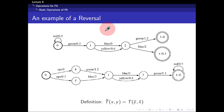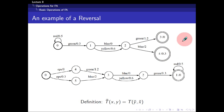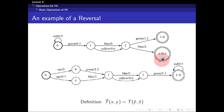For reversal, imagine placing a mirror at the center of the transducer, then taking the mirror image. If there are two different states, you combine them into one final state and one initial state. The initial state inherits the weight of the original final node, and the transitions are reversed accordingly. This is known as a reversal.